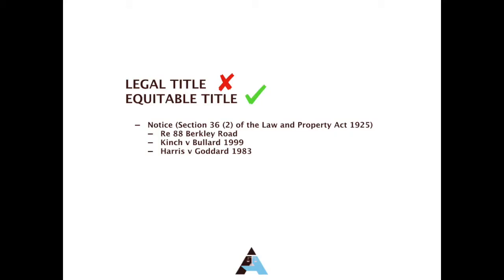Severance takes place when a joint tenancy is converted into a tenancy in common — in other words, an individual interest is severed from the whole. You cannot sever the legal title; only the equitable title can be severed. A joint tenancy can be severed by a notice being sent by one joint tenant to all the other joint tenants. Such notice must state that he or she wishes to hold their interest as a tenant in common. The notice does not have to be signed, but it must be sent to all the other joint tenants and delivered to the last known place of abode or business. The notice will be deemed to have been served if it is registered or sent by recorded delivery and not returned by Royal Mail. In cases where the notice has not been registered or sent by recorded delivery, it will be effective provided it can be proved that the notice was left at the last known place of abode or business. The notice must also show that the joint tenant wants to sever immediately.